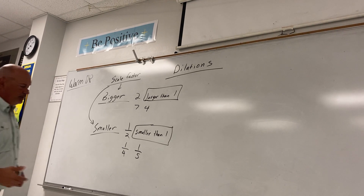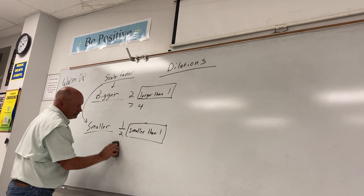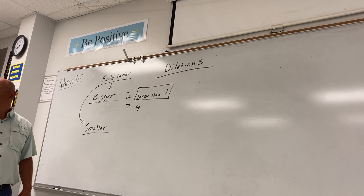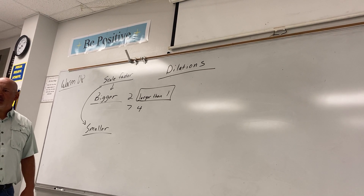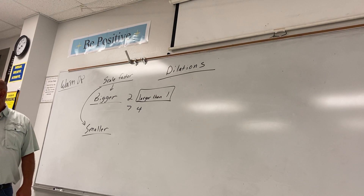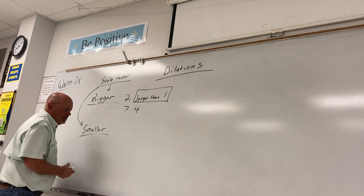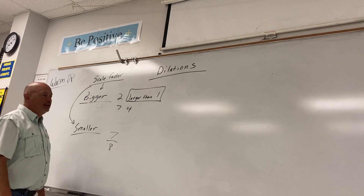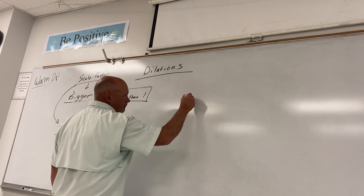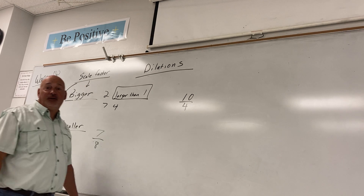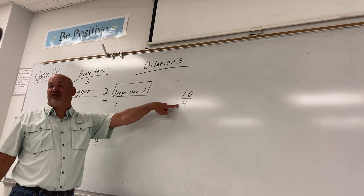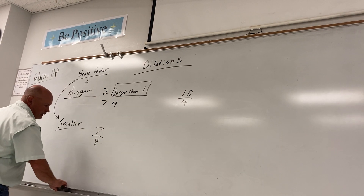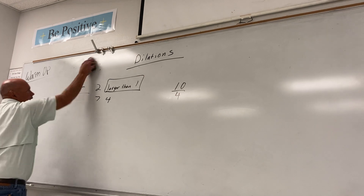Let's do some problems. What about seven-eighths — would that be bigger or smaller? Smaller, because seven-eighths is less than one. What about ten-fourths? When the number on top is bigger than the bottom, that's greater than one — ten-fourths is actually 2.5 as a decimal, so that would make it larger.